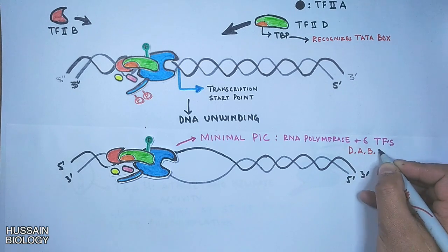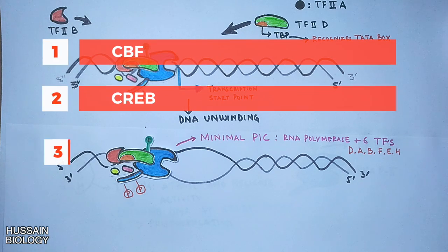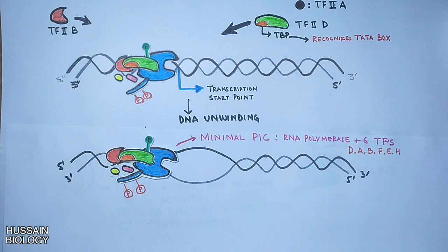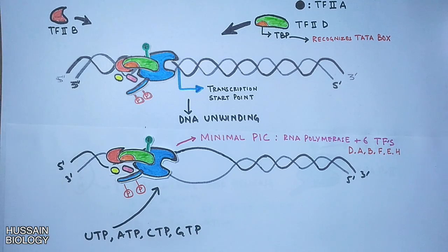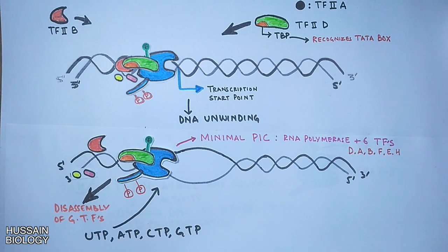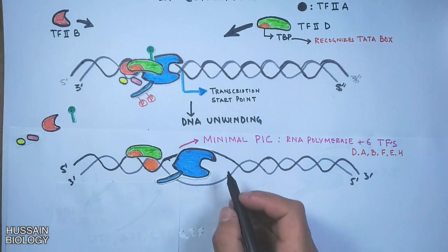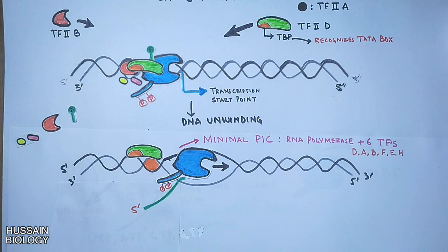There are other regulatory transcription factors that regulate transcription — such as CBF, CREB, and SP1, as shown in this table. Moreover, to drive transcription further, nucleotides are added to the transcription machinery, where first some factors disassemble and then the polymerase can initiate transcription. RNA polymerase 2 then moves forward on the 3-prime to 5-prime strand and synthesizes the RNA molecule with the help of elongation factors.